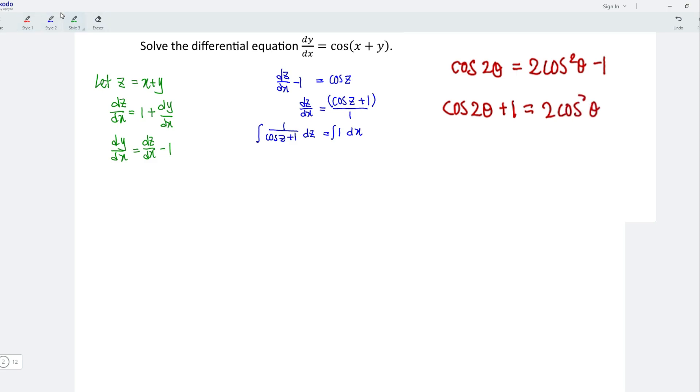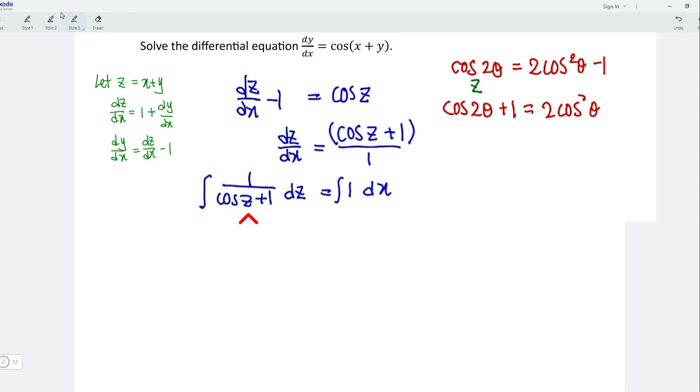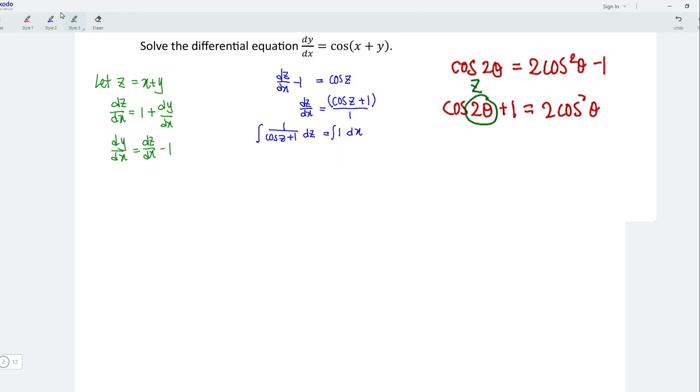By comparing, what we need here is z instead of 2 theta. If we let z be equal to 2 theta, which means that theta equals z over 2. Therefore, we should replace theta with z over 2.